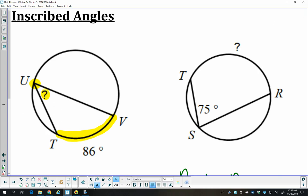In this one I have, again, an inscribed angle. Its vertex S is on the circle. This time I know the angle measure and I want to know the arc that it intercepts.